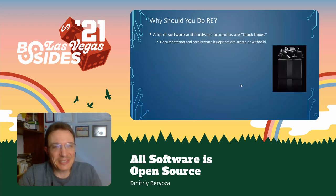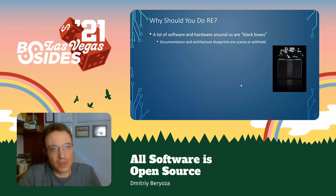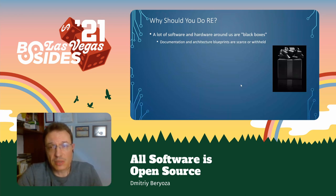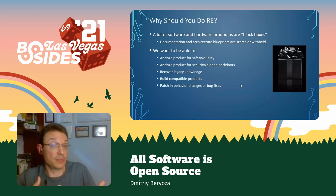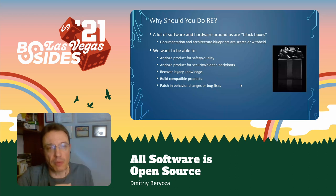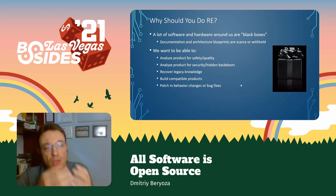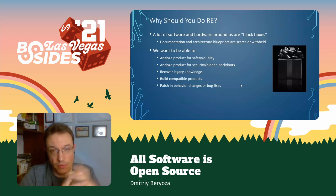So why should you do reverse engineering? A lot of software and hardware around us are black boxes. Documentation, architecture, blueprints are either not available because the company didn't care to share them, or they're commercial secrets withheld intentionally. But we still want to be able to look inside those black boxes — to analyze products for safety or quality, or if you're a security researcher, to look inside for either dangerous bugs you want to highlight, or look for hidden backdoors, which still happens.